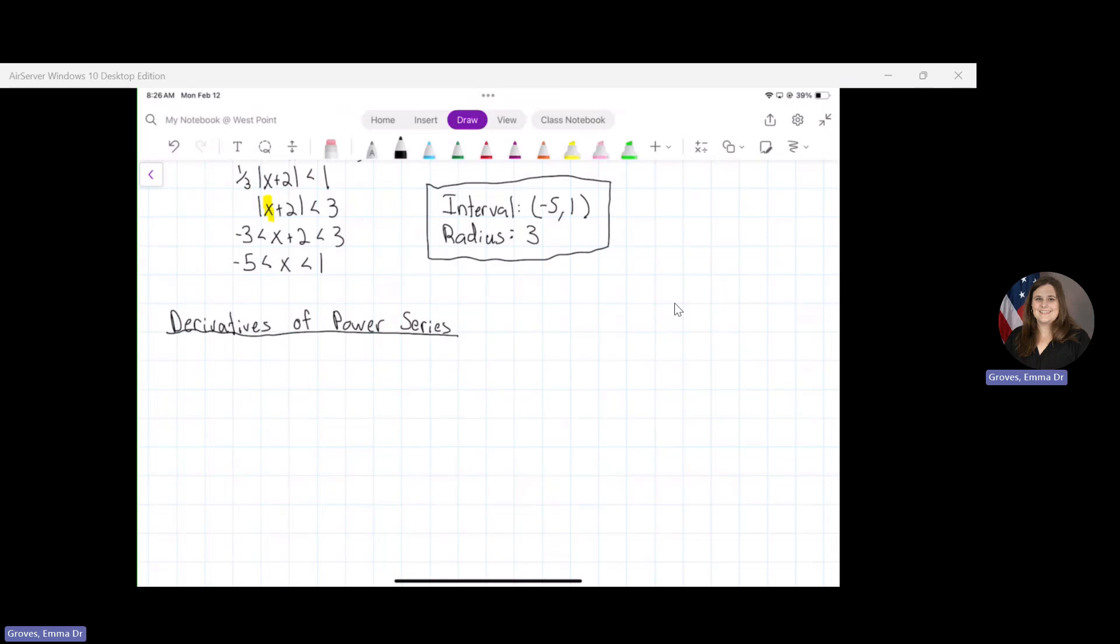Let's say we have the function f(x) equals the sum from n equals zero to infinity of a_n times (x - x_0) to the n.